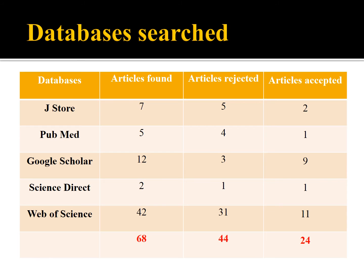These are the five databases which we looked into in order to arrive at the qualitative research works carried out specific to this area. Initially we arrived at 64 research papers, and later these 64 research works were scrutinized against the CASP quality criteria. Finally, we arrived at a set of 24 studies which have been taken into consideration for further synthesis. In the subsequent slides, I will explain the CASP quality criteria which we have used.